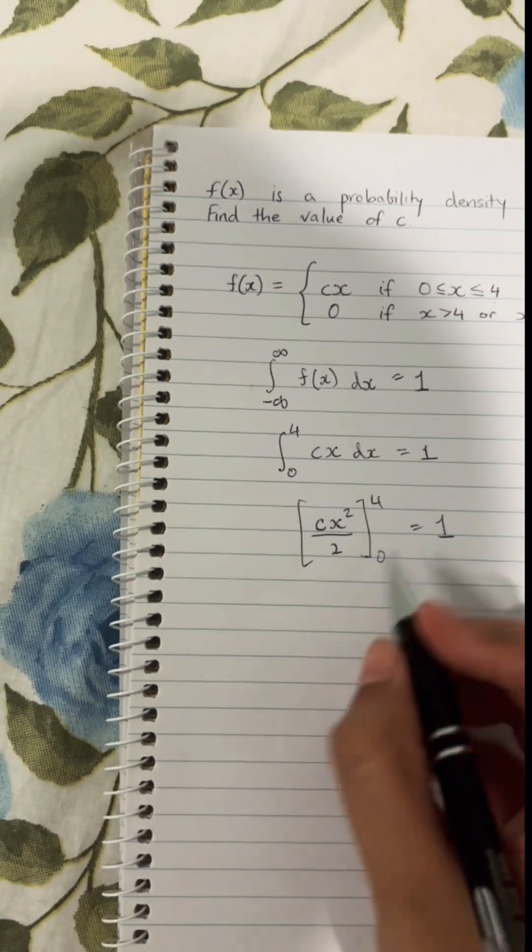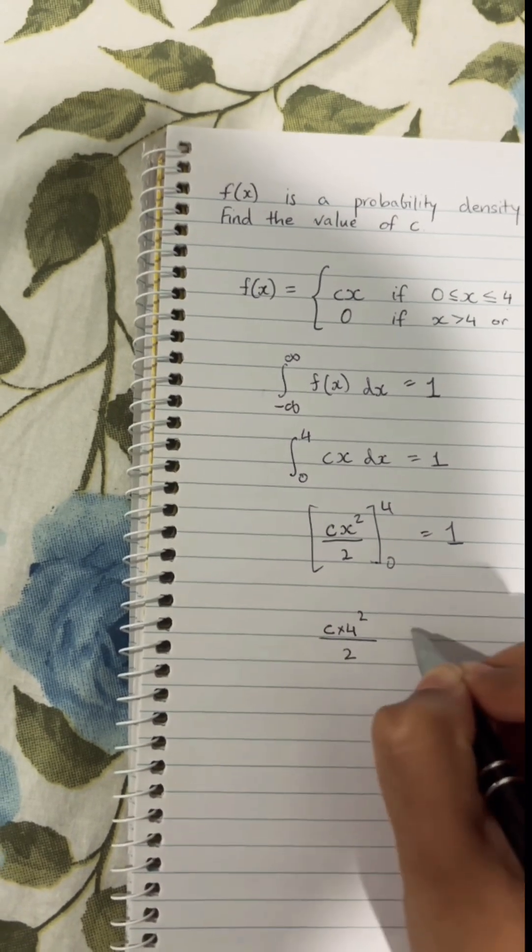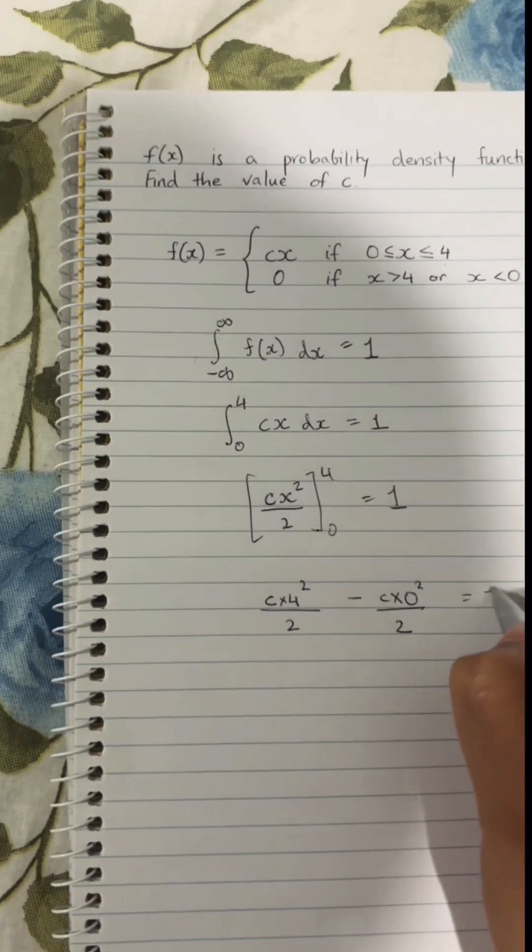Subbing 4 into x, we're going to get c times 4 squared over 2 minus c times 0 squared over 2 equaling 1.